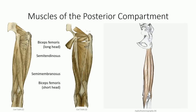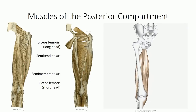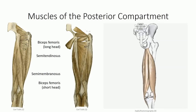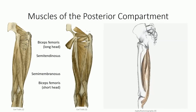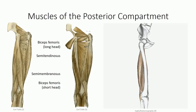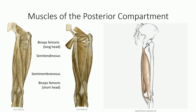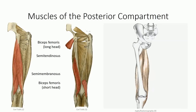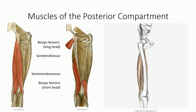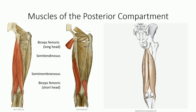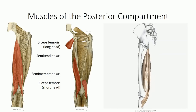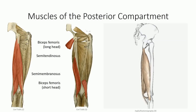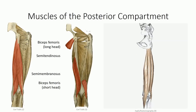The function of the hamstring portion of the posterior compartment is to extend the hip while flexing the knee. If the knee extensors act synergistically to resist flexion, the result is pure extension at the hip. In this capacity, the hamstrings are the principal hip extensors in walking. Note that the short head of biceps femoris can only contribute to knee flexion — it has no function at the hip joint.